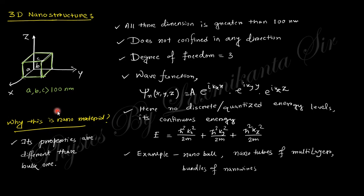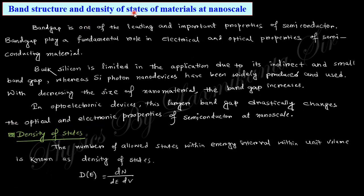Now for band structure and density of states: for a bulk material, when you reduce the size, the band gap actually increases. This increased band gap changes the electrical and optical properties. Within a band, there are energy levels — the number of energy levels defines the nature of the band. That is why you need to know about density of states, which is the number of available allowed energy states within a unit energy interval and unit volume. This helps determine the band structure, which in turn determines the electrical and optical properties.